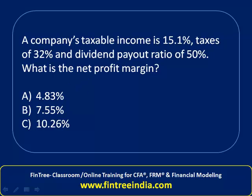A somewhat tricky question: a company's taxable income is 15.1%, taxes are 32%, and the dividend payout ratio is 50%. What is the net profit margin? First, the dividend payout ratio looks like irrelevant extra information. Let's assume the company's sales is X.